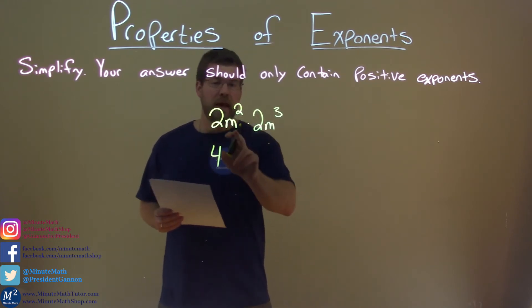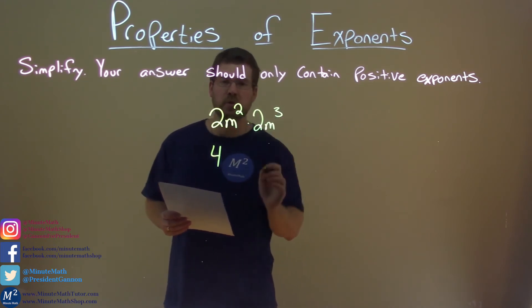Well, now we have the m's. So, we got the twos done, we have the m's. We have m squared times m to the third.